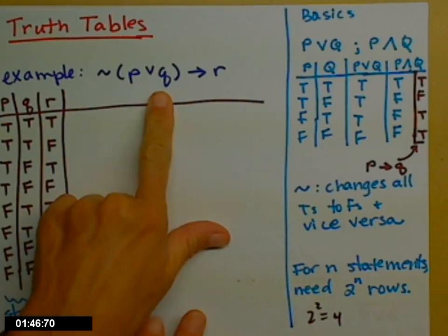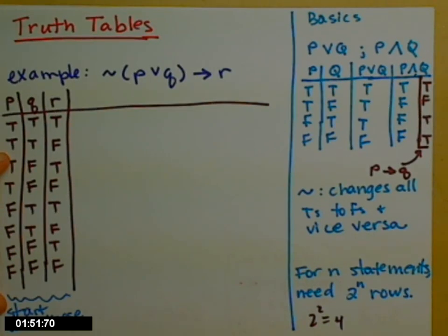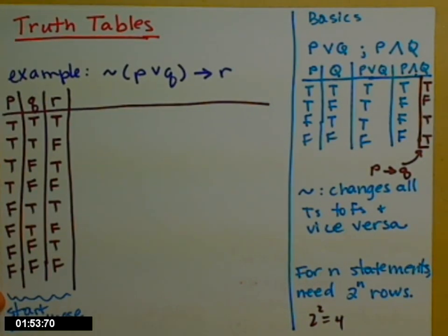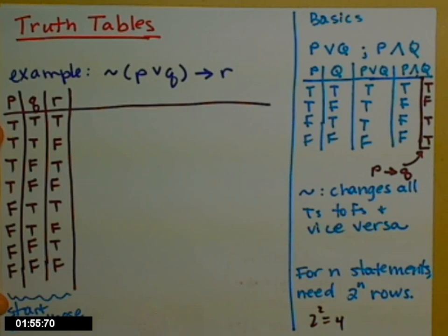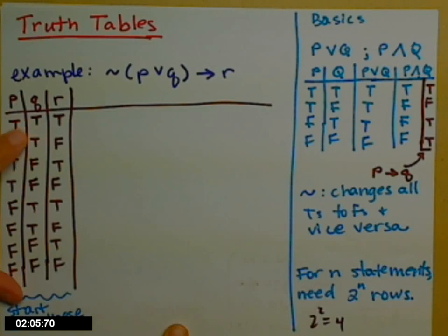In the example I wanted to show you, I have P, Q, and R. I have three statements. So that means I need 2 to the 3, or 8 rows, which I've already started with. And notice I've organized them similarly to my little 4 over here. The P's, I do half of them TRUEs, and then I do the next half FALSEs. For the Q, I do by 2s, so 2 TRUEs, 2 FALSEs, 2 TRUEs, 2 FALSEs, and then R's I alternate. It's just a quick way to make sure you get all of the possibilities taken care of.